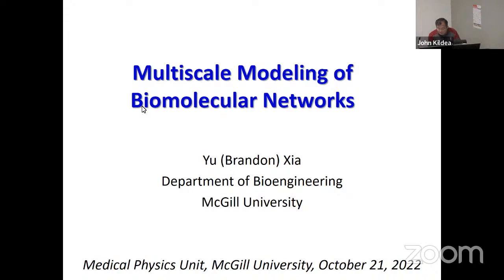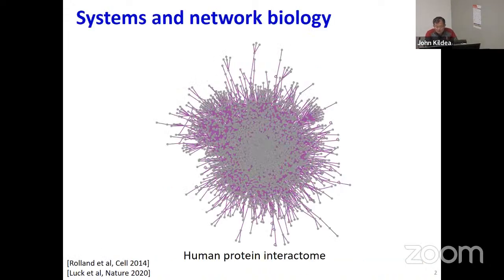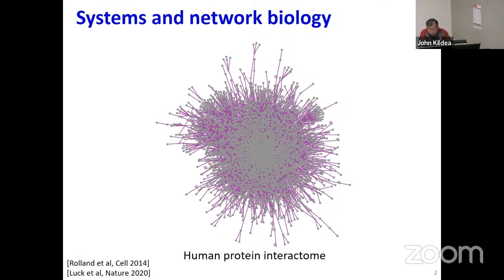What I'm going to talk about is multiscale modeling of molecular networks. There's a lot of interest currently on this topic of systems biology and network biology. Here I'm showing you a picture—a hairball of the so-called human protein interactome. As all of you know, the human genome encodes about 20,000 genes. If you assume that each coding region encodes one protein, then it has about 20,000 proteins. Each one of these dots in this graph represents a human protein.